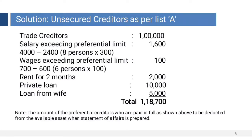Here is one note: the amount of preferential creditors who are paid in full, as shown above, is to be deducted from the available assets when the statement of affairs is prepared. We shall see how the statement of affairs is prepared and how this amount is deducted therein.